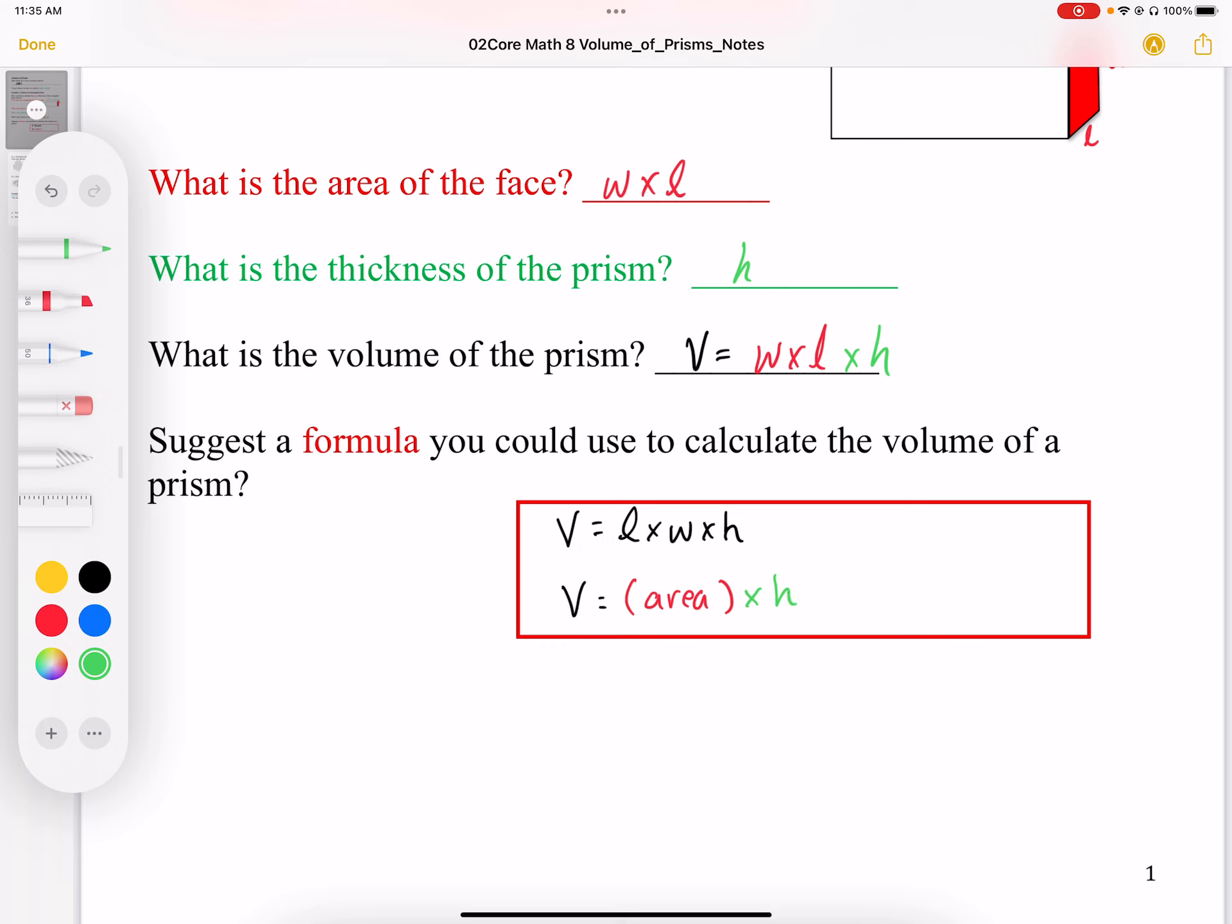So area times height is going to be how we're going to think about volume. That's how we make cubes. We take square areas and we give it thickness to give it volume.